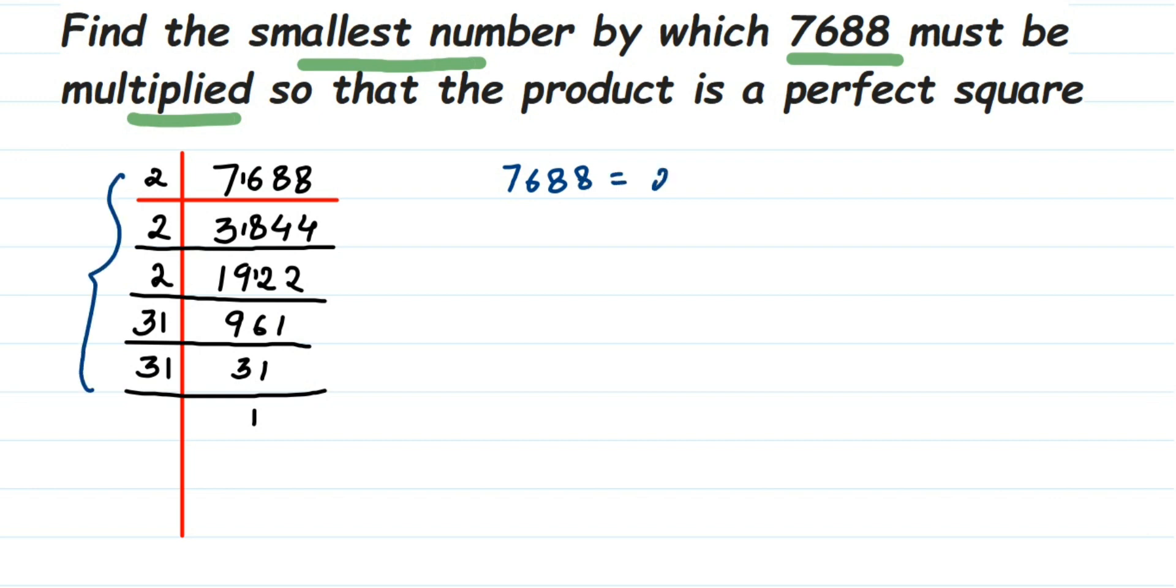If the number is a perfect square, the prime factors will always be in pairs. You can see that this two is forming a pair, and this 31 is also forming a pair. But there's one single two which is left out.